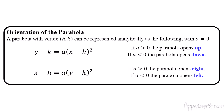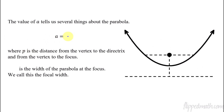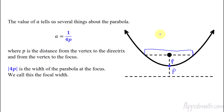A couple more helpful things about this form: a equals 1 over 4p. This is another variable that really helps us out. p is the distance from the vertex to the directrix, and it is also the distance from the vertex to the focus. So if I can identify that the denominator is 4p, I can figure out the value of p and how far away the focus is. The absolute value of 4p is the width of the parabola at the focus — we call this the focal width.